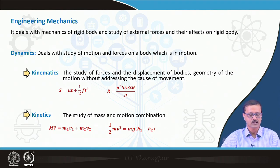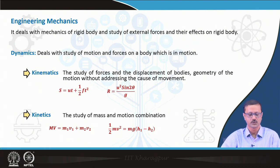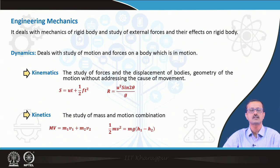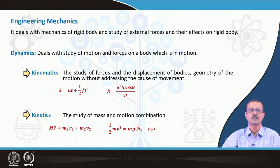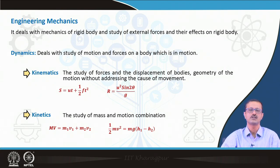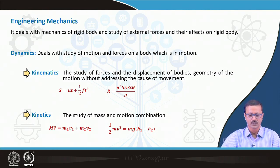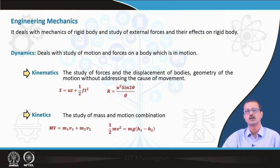The second part of dynamics is kinetics, which is the study of the mass and motion of a body. In motion, mass is involved. The equation mv = m₁v₁ + m₂v₂ represents conservation of momentum, which includes both mass and velocity. Another equation, ½mv² = mg(h₁ − h₂), is the energy equation, where potential energy is converted to kinetic energy as an object falls from h₁ to h₂. In kinematics, no mass is involved.